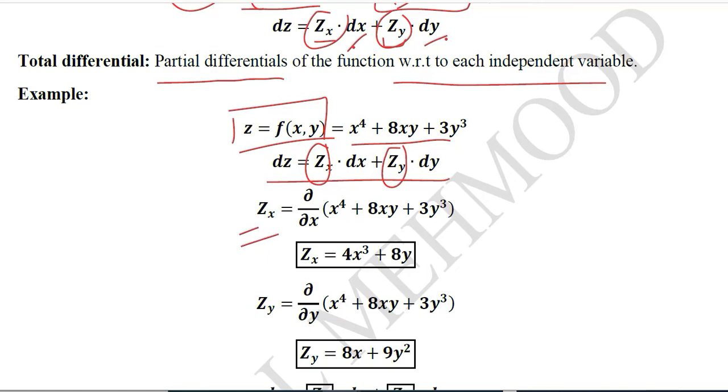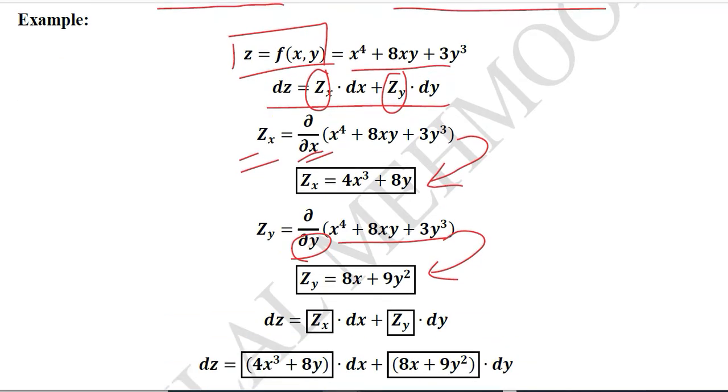Z_x can be found simply by differentiating it with respect to X and the answer will be this. Z_y can be calculated by differentiating the given function with respect to Y and the answer will be this. We know how to partially differentiate the functions. We have done this before, so I assume that you already know how to do it.